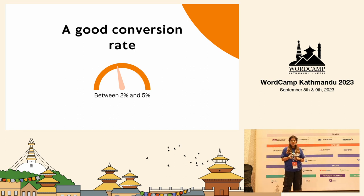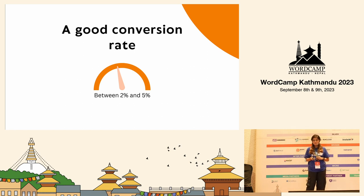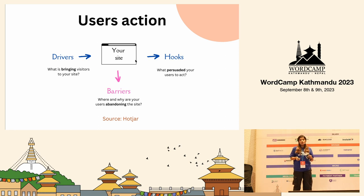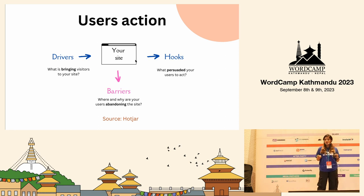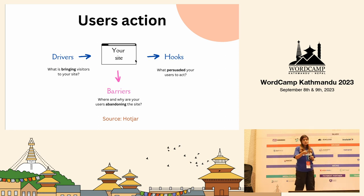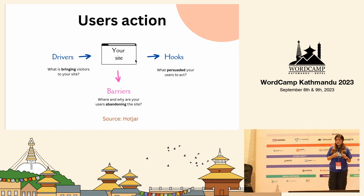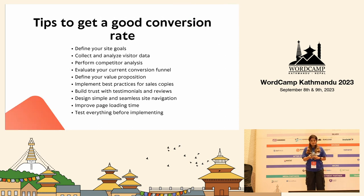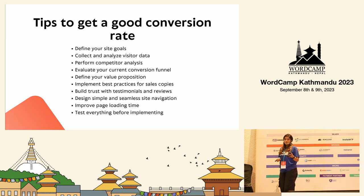3% is already considered a good conversion rate. Now, let's look at the user section. Users get into your website and are hooked by some element — it can be an image, a blog, or any interesting element they find. Then they exchange something with you. And there are also some users who didn't find your website interesting or beneficial and just left. From analyzing these barriers, I have sorted out some ideas to get a good conversion rate for your website.